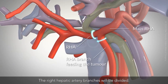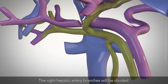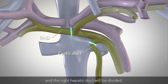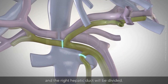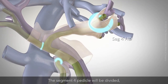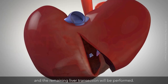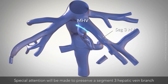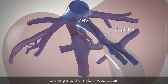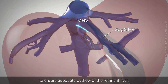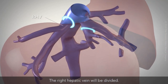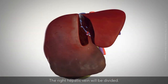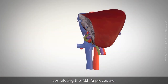The right hepatic artery branches will be divided. The cystic duct and the right hepatic duct will be divided. The Segment 4 pedicle will be divided, and the remaining liver transection will be performed. The middle hepatic vein will be divided, with special attention made to preserve a Segment 3 hepatic vein branch draining into the middle hepatic vein to ensure adequate outflow of the remnant liver. The right hepatic vein will be divided and the specimen will be removed, completing the ALPPS procedure.